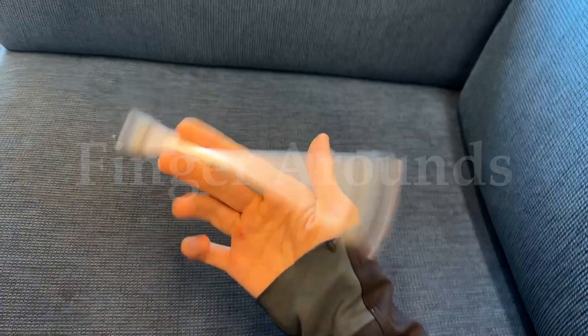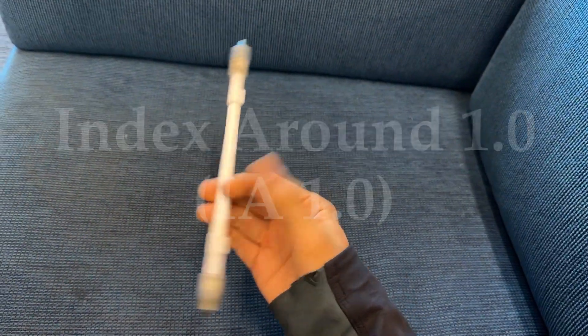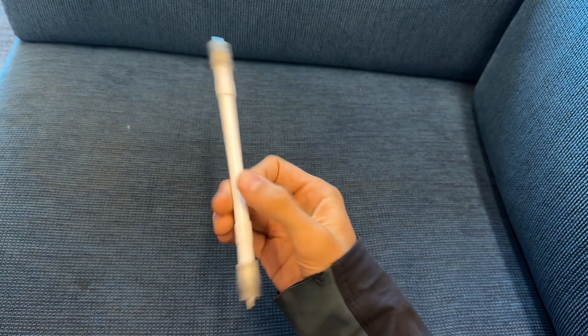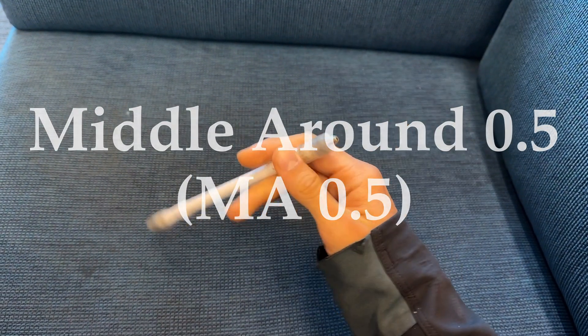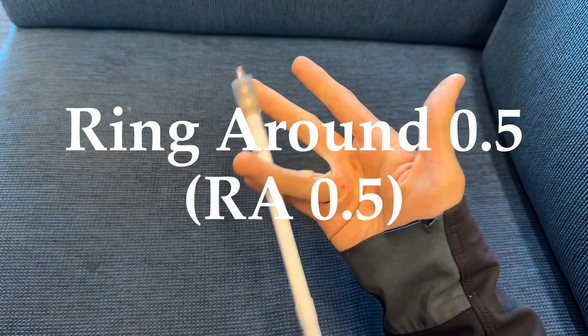Next are the finger arounds. Here is an index around. Here's a middle around 0.5. And here's a ring around 0.5.